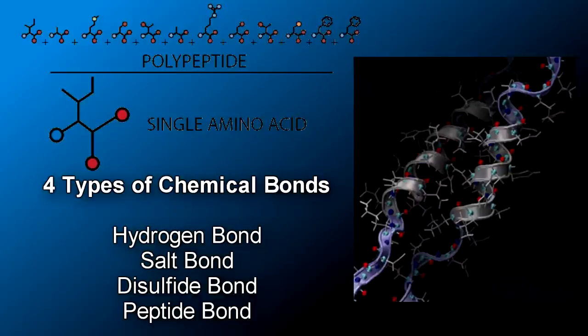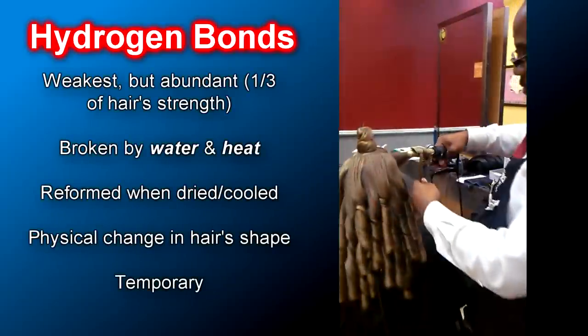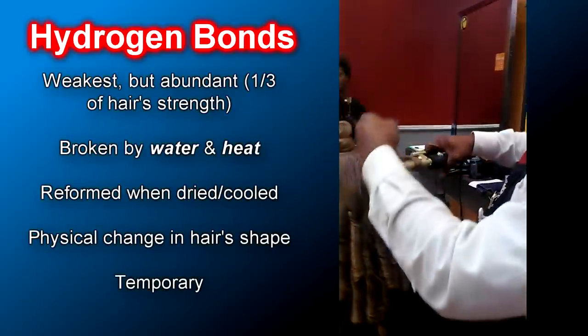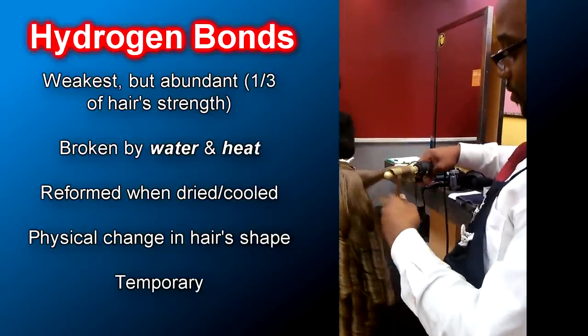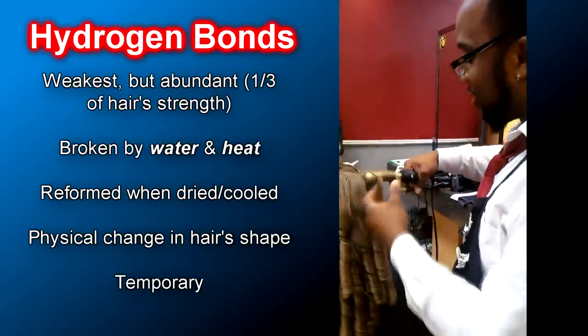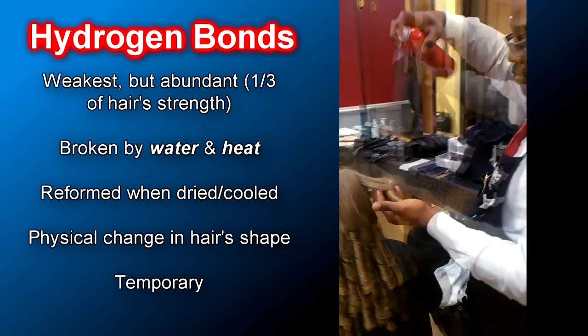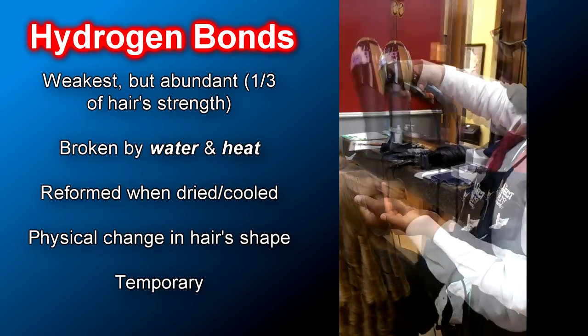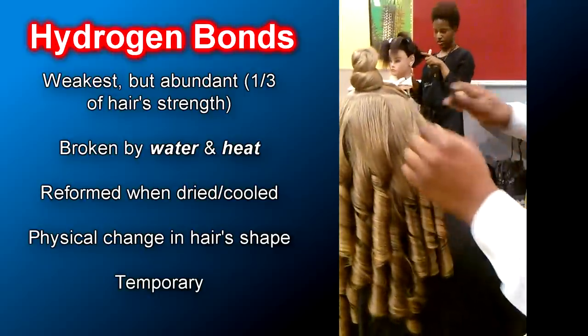I will briefly go into detail about each type of bond and how they work, as well as the effect that they have on our hair. The first type of bond I want to discuss are hydrogen bonds. These are bonds formed between a hydrogen and oxygen atom through opposite electrical charge attraction. They are the weakest type of bonds in our hair, but make up about one third of our hair's strength. Hydrogen bonds are easily broken when water or heat is applied to the hair, and are reformed when the hair is dried or cooled, locking the hair into its new shape. Changes in hydrogen bonds are considered a physical change that is only temporary.